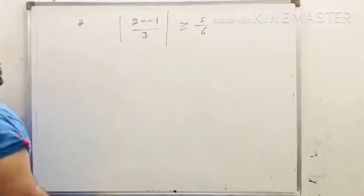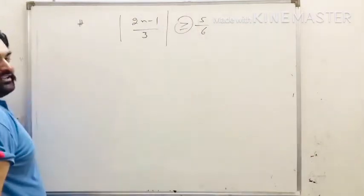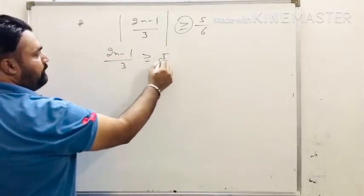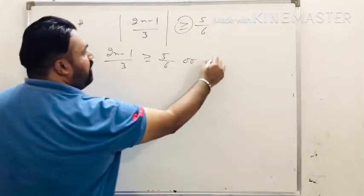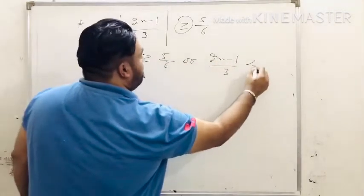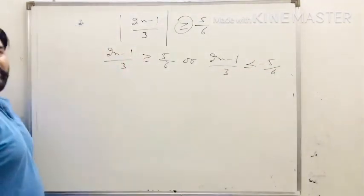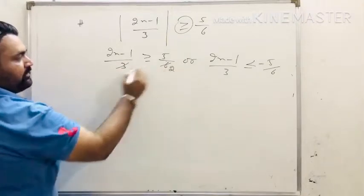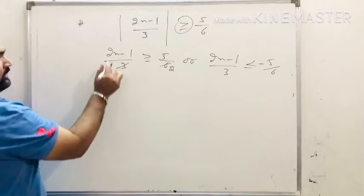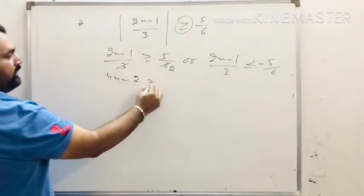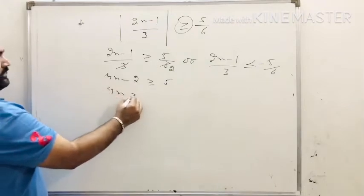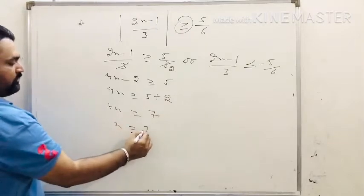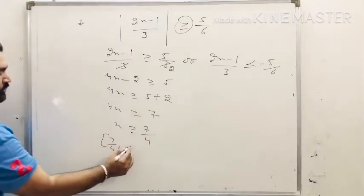The next question is modulus of 2x minus 1 divided by 3 greater than or equals to 5 upon 6. The important thing is the sign is greater than, so the value of this modulus function is either greater than or equals to 5 upon 6, or less than or equals to minus 5 upon 6. Cross-multiplying and simplifying: 4x minus 2 greater than or equals to 5, so 4x greater than or equals to 7, giving x greater than or equals to 7 by 4, so the interval is 7/4 to infinity.